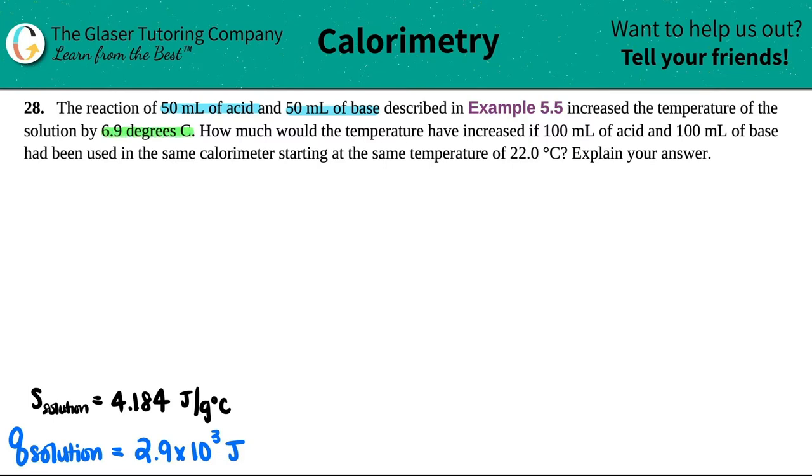How much would the temperature have increased if 100 mL of acid and 100 mL of base had been used in the same calorimeter starting at the same temperature of 22.0°C? Explain your answer.